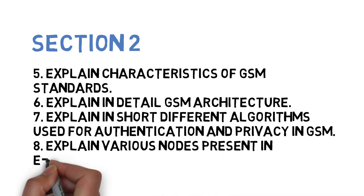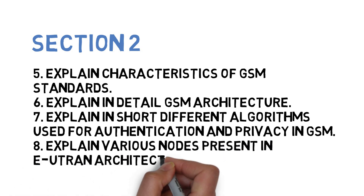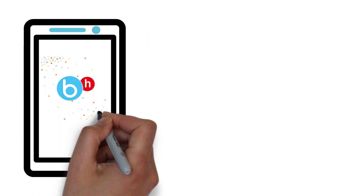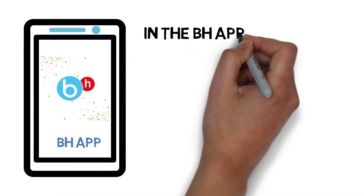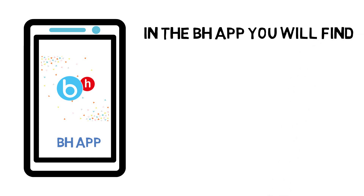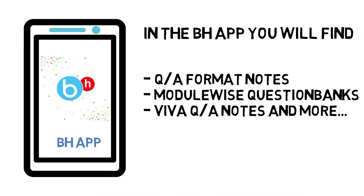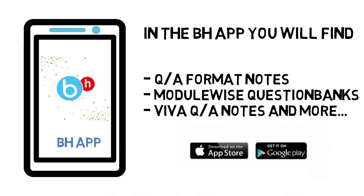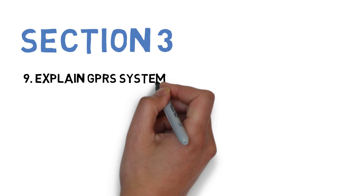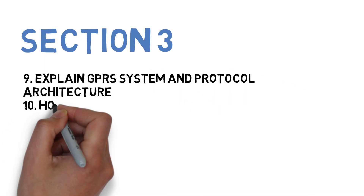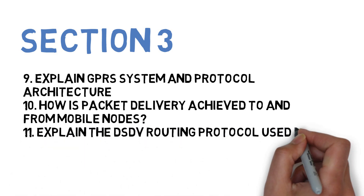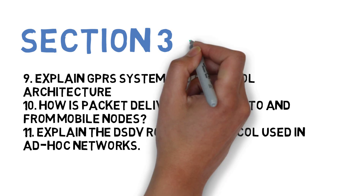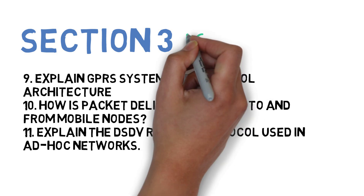We have already uploaded answers in the Brain Eaters app, so if you need detailed explanation, question answers, module-wise question banks — everything is already updated there. Now for section three, the first question is explain GPRS system and protocol architecture, next is how is packet delivery achieved to and from the mobile nodes, and the third is explain DSDV routing protocol used in ad hoc networks.